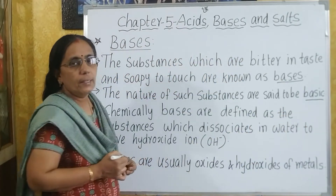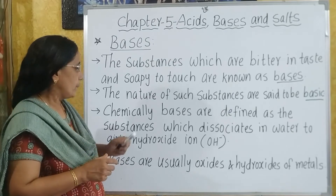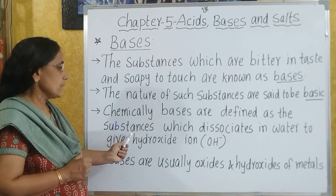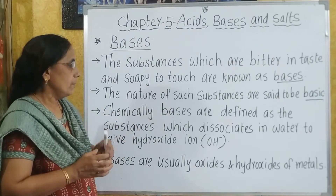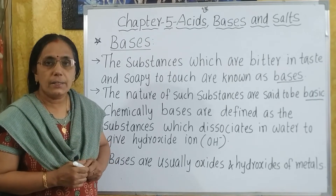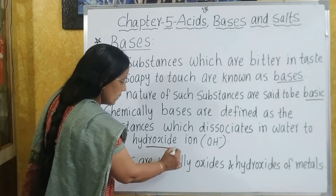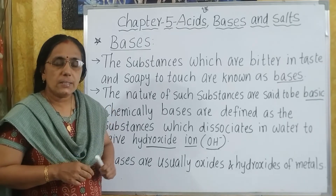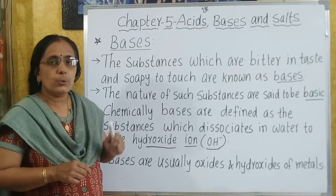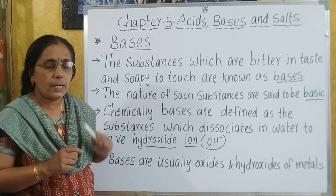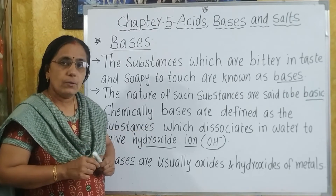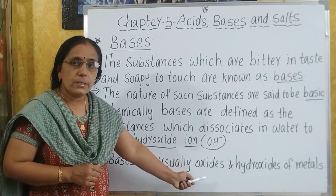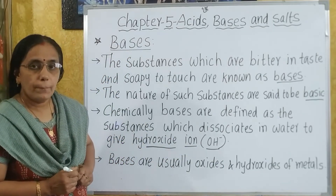Chemically, the bases are basic in nature. It has got a chemical definition — the substances which dissociate in water to give hydroxide ion, that is OH minus ion. Chemically, bases are defined as the substances which dissociate into OH minus ions, that is hydroxide ions, when dissolved in water. We can say that bases are either oxides or hydroxides of metals.